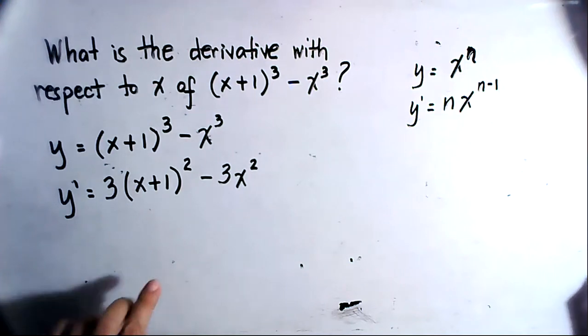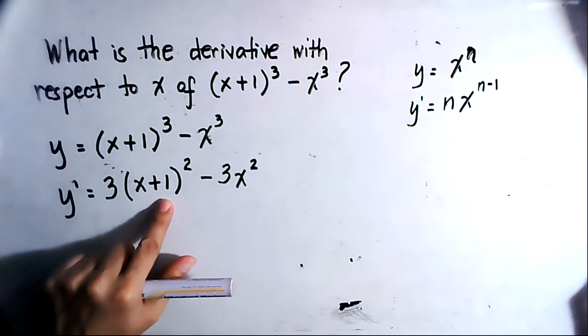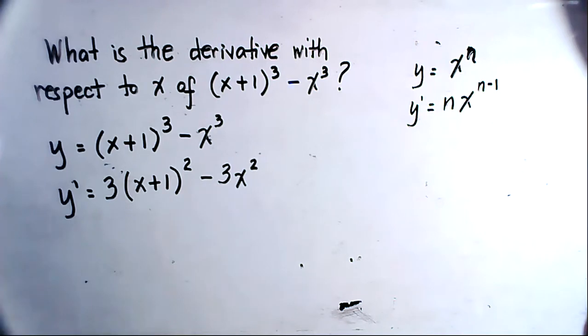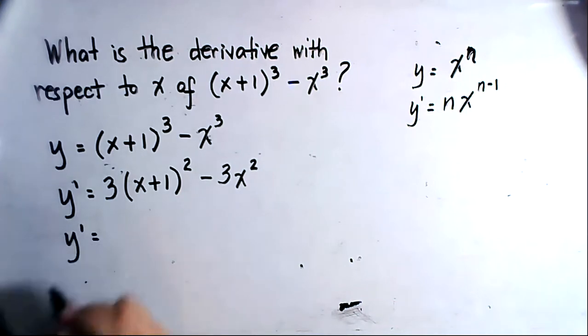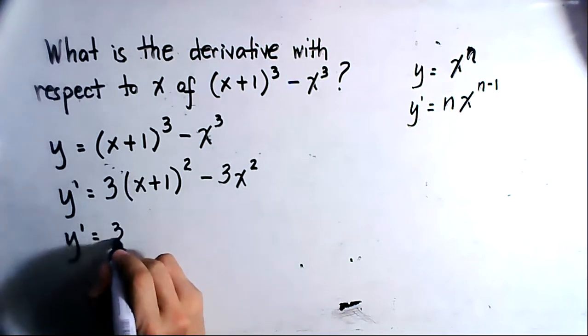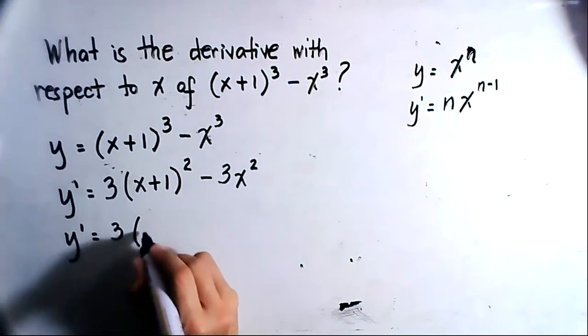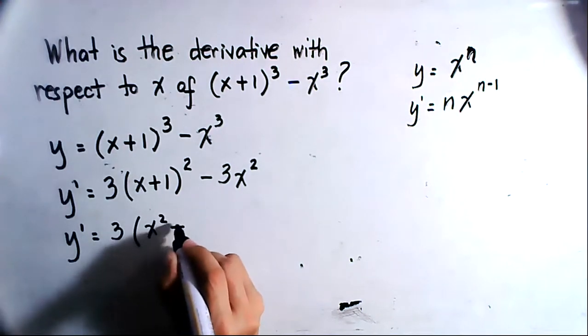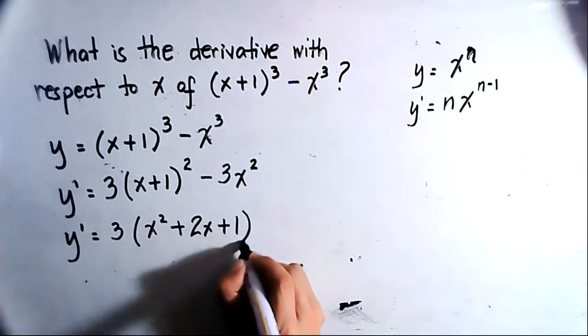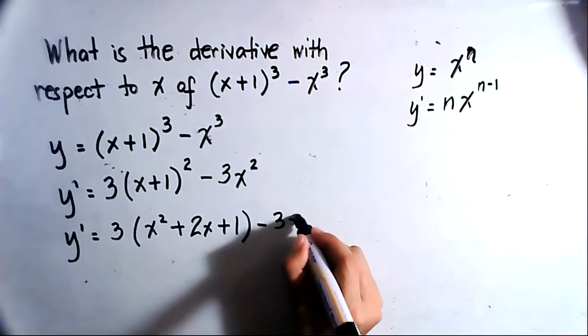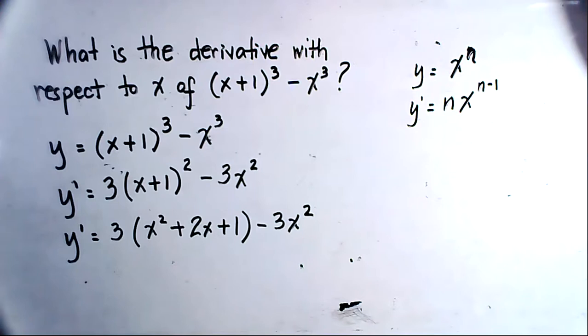Now you would notice that (x+1) is raised to the second power. So we can express (x+1)² into a perfect square trinomial. That would give us y prime equals 3 times (x² + 2x + 1) - 3x².